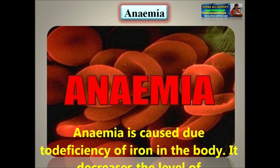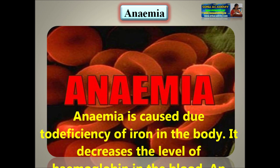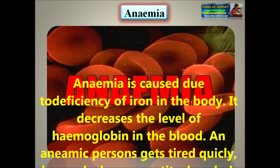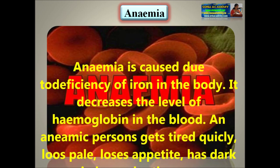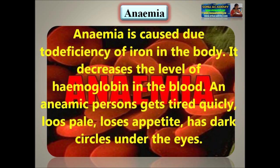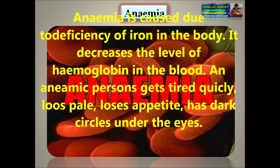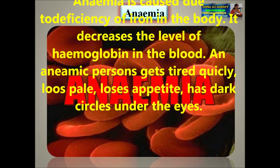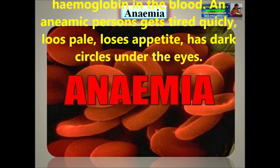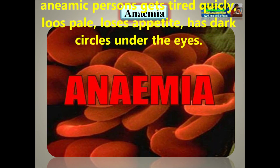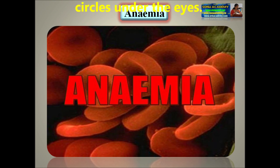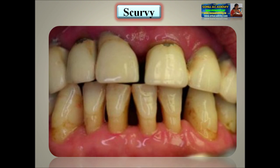Anemia is caused due to the deficiency of iron in the body. It decreases the level of hemoglobin in the body. A person with anemia gets tired quickly, loses appetite, and has dark circles under the eyes.